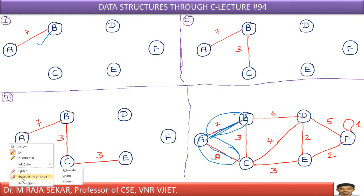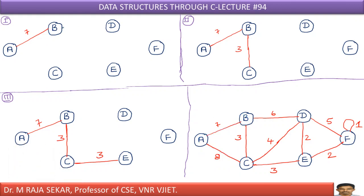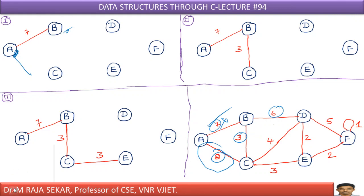Now I must search for all the possibilities from B as well as A. From A, I have one possibility with weight 8. From B, I have three possibilities — this one is already completed, so I need not bother about it. The remaining are 6, 3, and 8. Which one is minimum? 3 is minimum. Therefore, I must include that edge.